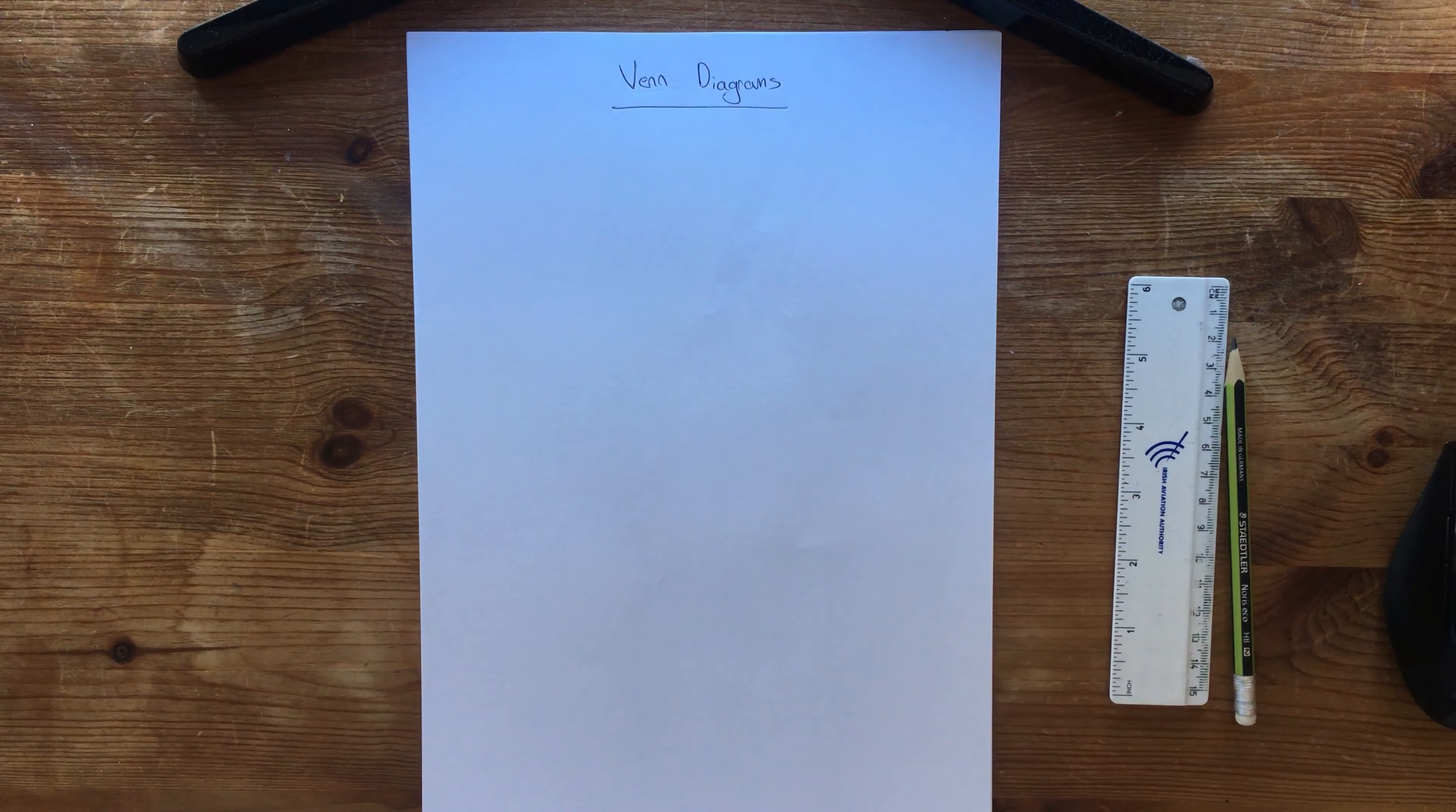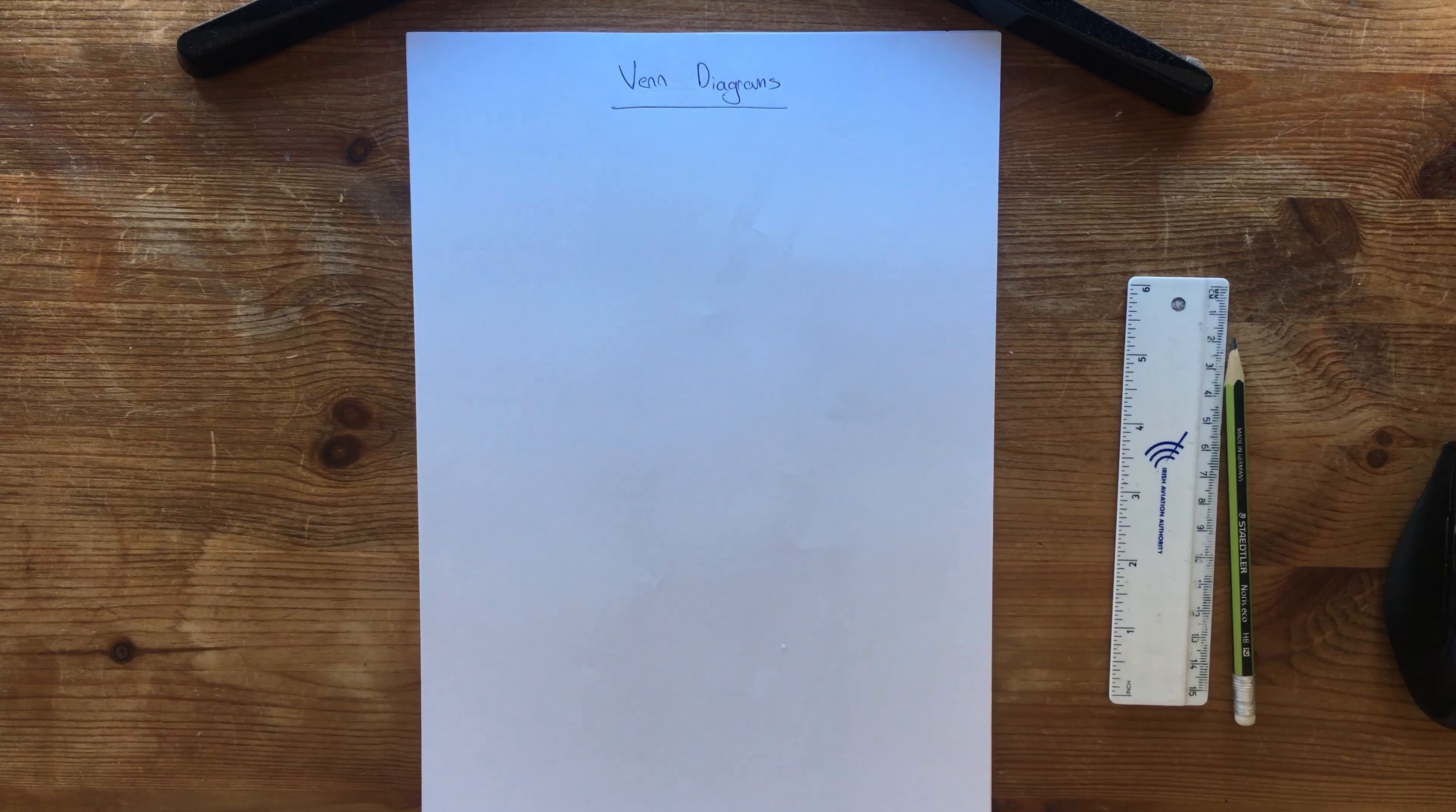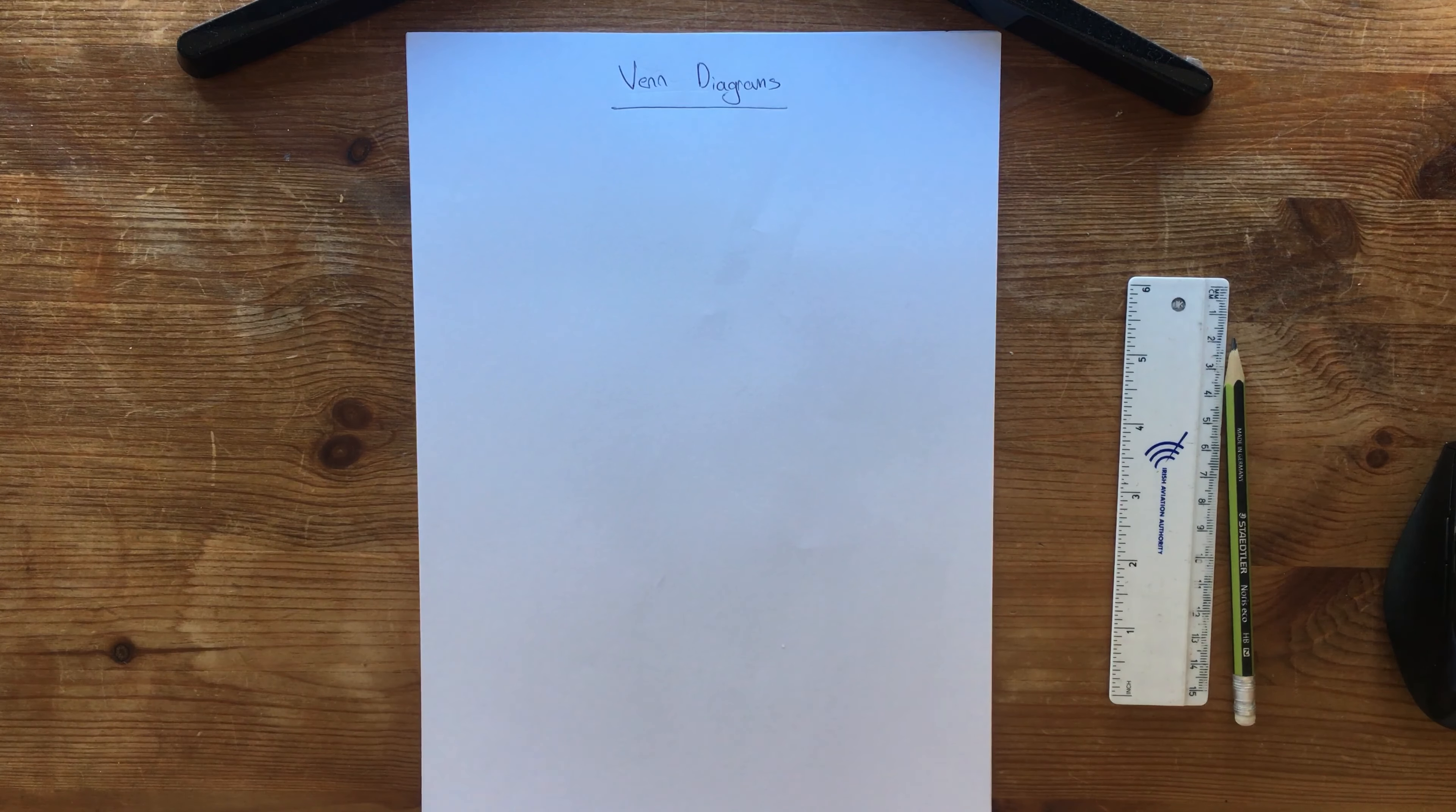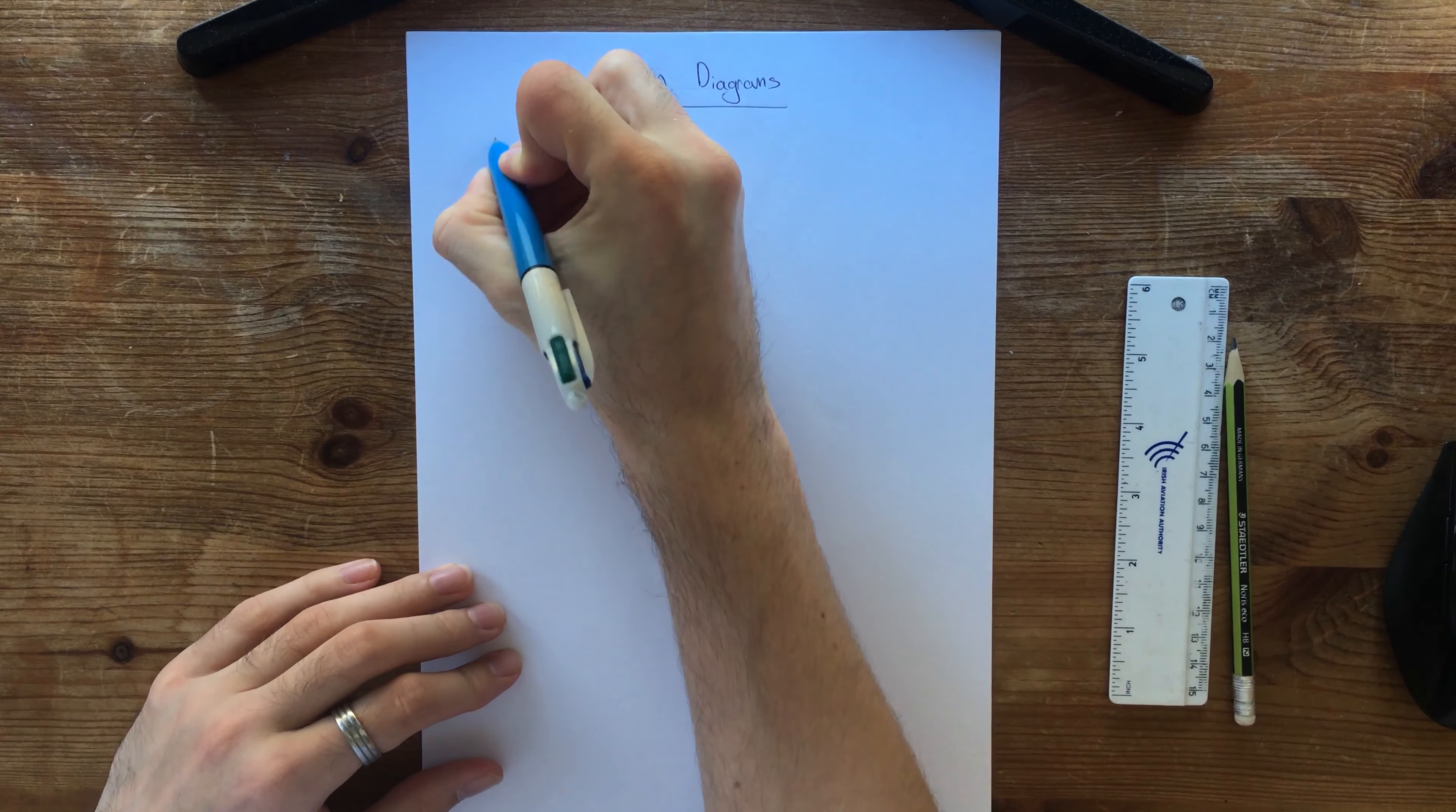Alright, so we're going to look at some Venn diagrams. So what is a Venn diagram? First of all we'll look at, we'll just take a look at two different sets. Let's call them A and B.